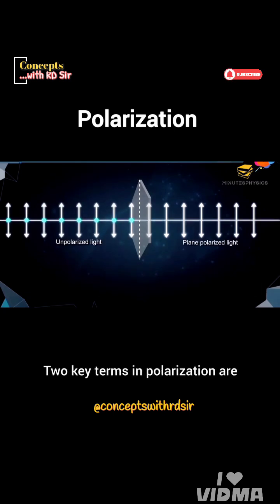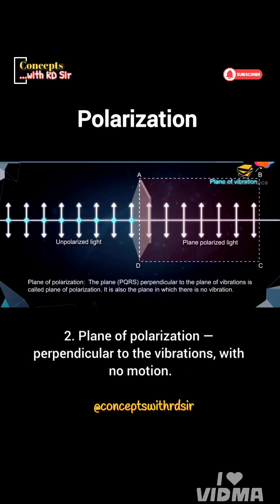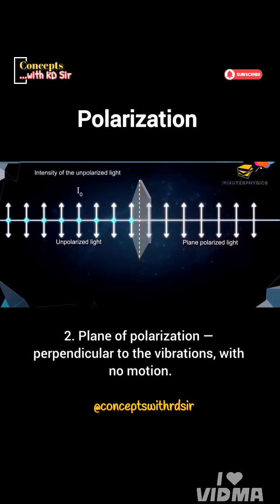Two key terms in polarization are: one, plane of vibration, which contains the light's vibrations; and two, plane of polarization, which is perpendicular to the vibrations with no motion.